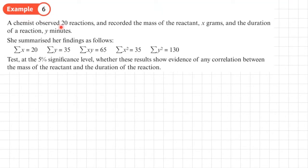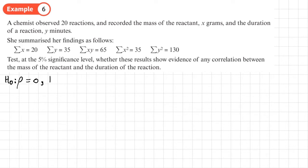Example 6: a chemist observed 20 reactions and recorded the mass of the reactant X grams and the duration of the reaction Y minutes. She summarized her findings with summary statistics. Test at the 5% significance level whether these results show evidence of any correlation. Since it doesn't say positive or negative, H0 is that there is no correlation in the population, and H1 is that rho is not equal to zero, which means we're doing a two-tailed test.